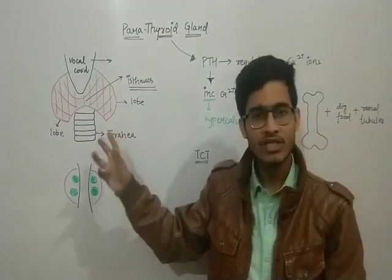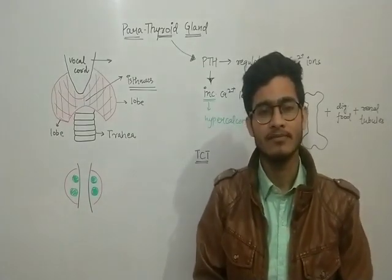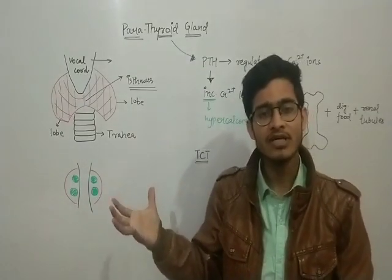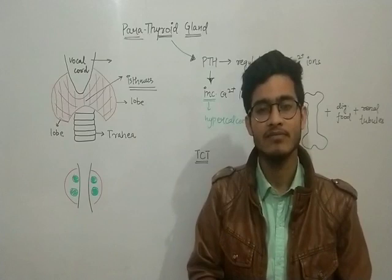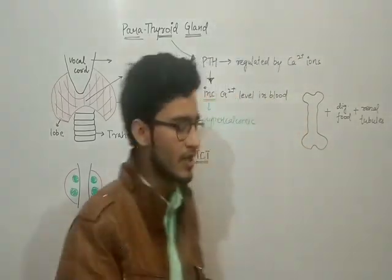So what is the location? Just behind the thyroid gland, and where the thyroid gland is present on either side of trachea, the lobes of thyroid glands are present.